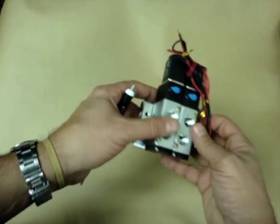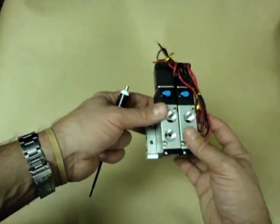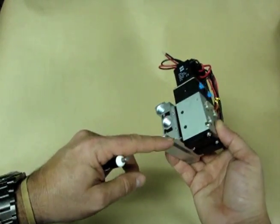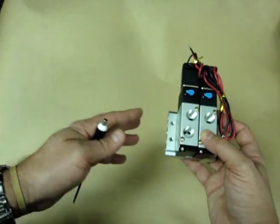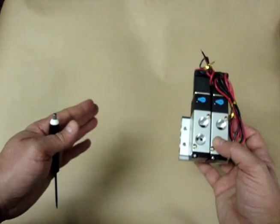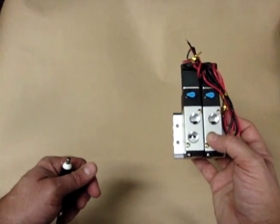Now we have a cluster of two solenoids here. We sell these manifolds from two all the way up to sixteen. You could stack these valves all the way up to sixteen valves next to each other.